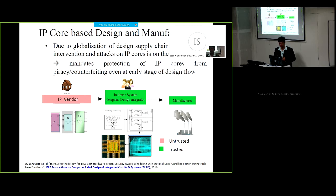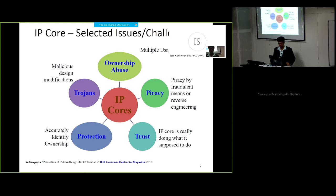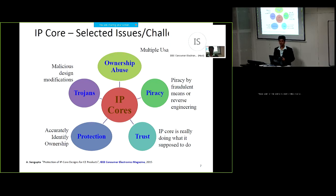There could be threat models where the manufacturer is considered untrustworthy, but in this diagram we are looking at the IP vendor as the attacker. Key challenges and major issues include ownership abuse, where multiple usages may be made to one license; IP piracy, meaning fraudulent means through reverse engineering to get back into the design; trust, whether the IP core is really doing what it is supposed to do; and Trojans, which are malicious design alterations made to the system or IP without the knowledge of the design integrator.